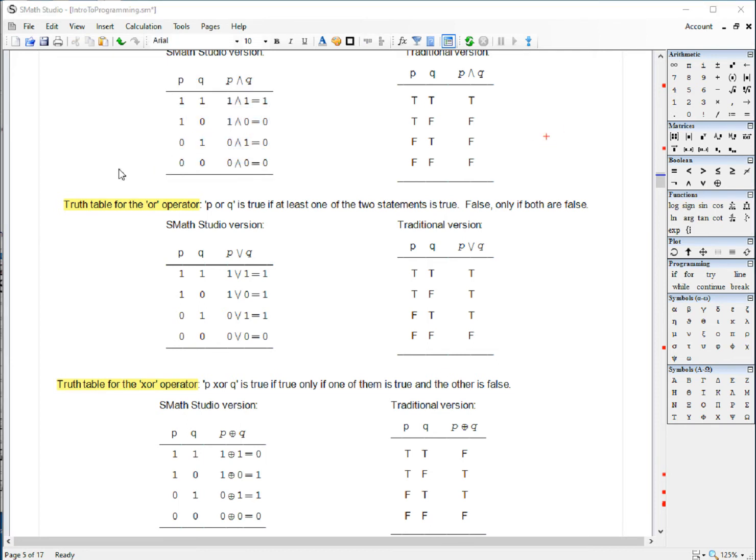On the other hand, for the OR operator, the conditions are such that as long as one of the two statements is true, the whole combination is true. If both are false, then it's the only situation in which the OR produces a false outcome. And this is represented in SMASH Studio with these combinations.